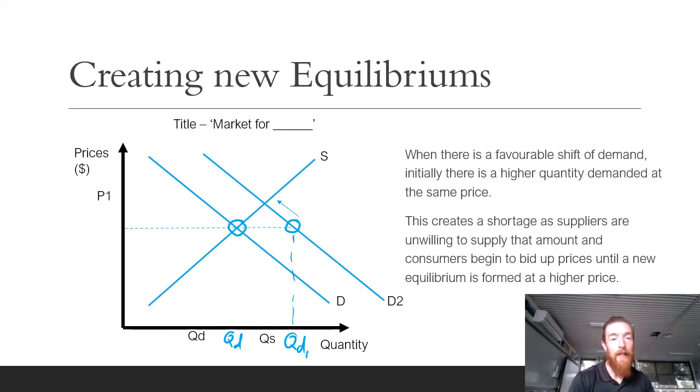What that means is that we are now below what will become the new equilibrium point. This creates a shortage because supply is still at the original equilibrium and demand is at the new point because of the favorable shift. Then consumers begin to bid up prices until you reach that new equilibrium price at a higher price overall. When there is a favorable shift in demand, or when there is an unfavorable shift in supply, it causes a shortage, and consumers begin to bid up prices until a new equilibrium is formed at a higher price.